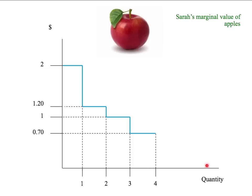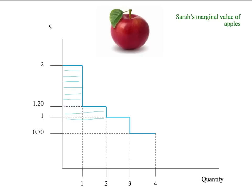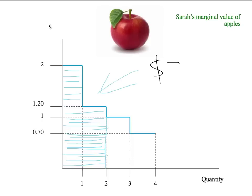We plotted that — with quantity on the horizontal axis and dollars on the vertical axis — as Sarah's marginal value curve. From this marginal value curve, we can work out Sarah's total value, for example, of two apples. We simply look at the area under Sarah's marginal value curve up to the quantity of two apples. This blue shaded area is Sarah's total value from receiving two apples — in this example, $2 plus $1.20 equals $3.20.